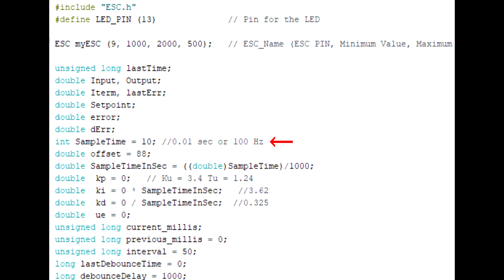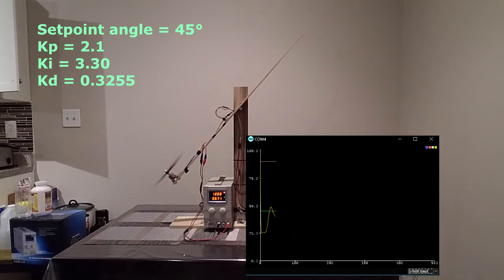Now let's see how the propeller system performs with the following PID gain constants. Now for this example, I've set my set point to 45 degrees.